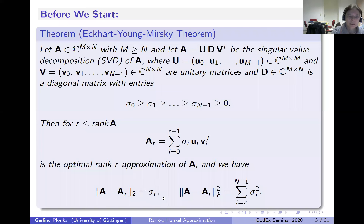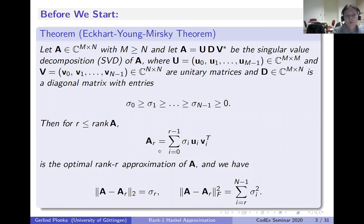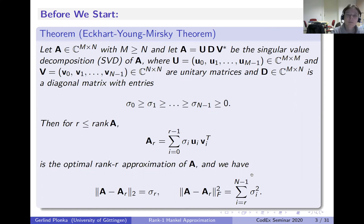You can always solve the problem to find the best rank R approximation of matrix A, just by taking the singular vectors corresponding to the largest R singular values. That solves the optimization problem not only in the spectral norm but also in the Frobenius norm, and I know in advance what the error will be. The error is exactly the singular value—the largest one not used in the rank R approximation. For the Frobenius norm, you add up all the unused singular values squared and take the square root. This is our benchmark.